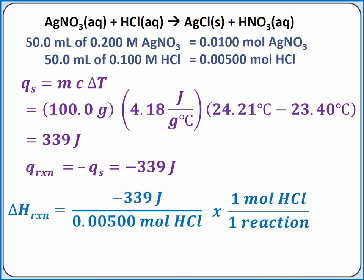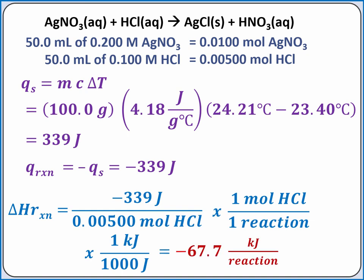We'll start the dimensional analysis with the energy produced divided by the amount of limiting reagent used. We can convert from moles of HCl to reactions using the coefficient in the balanced chemical equation — we need one mole of HCl for one reaction. Then we can convert from joules to kilojoules. Completing the calculation, we get negative 67.7 kilojoules per reaction, which we represent as negative 67.7 kilojoules, since the enthalpy of reaction is associated with the coefficients of the reaction as written. The negative sign indicates this is an exothermic reaction.